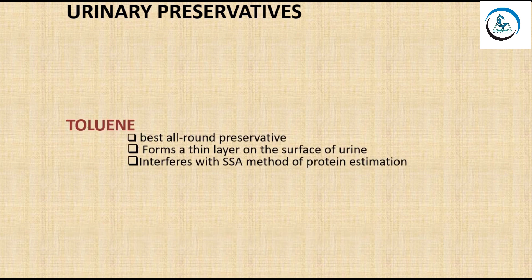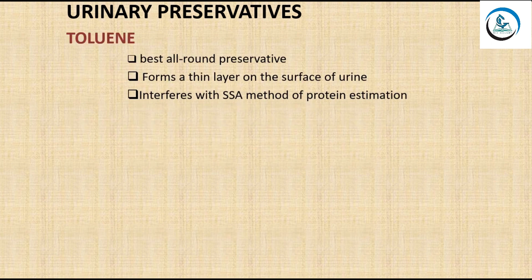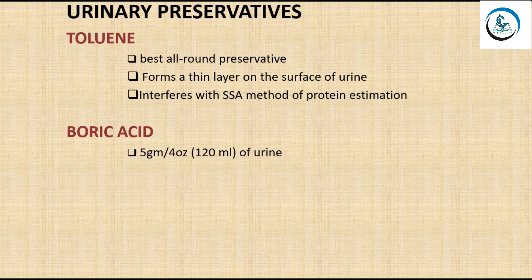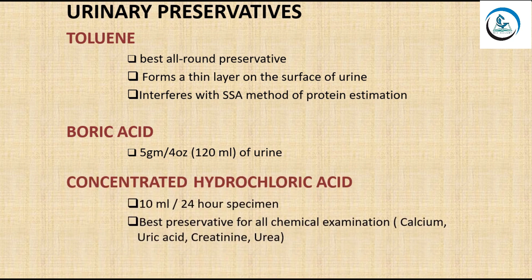Prolonged standing also leads to oxidation of urobilinogen to urobilin, destruction of glucose by bacteria, and lysis of RBCs, WBCs, and casts. The first preservative is toluene, the best all-around preservative, which forms a thin layer on the surface of urine. Its major disadvantage is that it interferes with the sulfosalicylic acid method of protein estimation. The second is boric acid, used at 5 grams per 120 ml of urine.